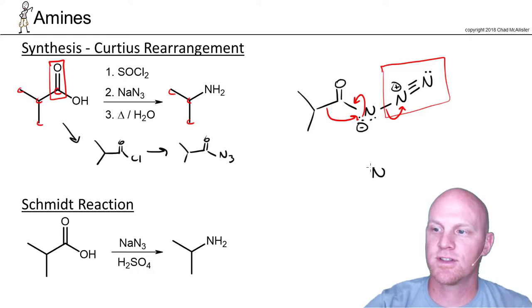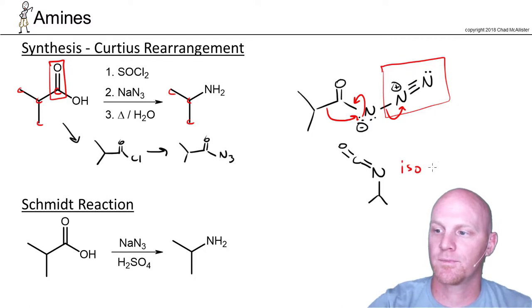So we'll have a nitrogen that's going to be double bonded to the carbon that's double bonded to oxygen, but that nitrogen is also going to be bonded to this group. And once again, that is an isocyanate there as well.